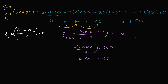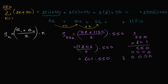Let me just multiply that out — 550 times 601. One times 550 is 550. The tens digit is zero, so zero times 550 gives a bunch of zeros. Then in the hundreds place: six times zero is zero, six times five is 30, six times five is 30 plus three is 33. Adding it all together, we get 330,550.